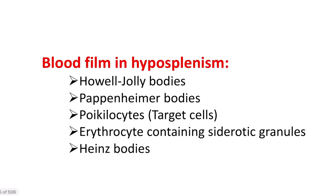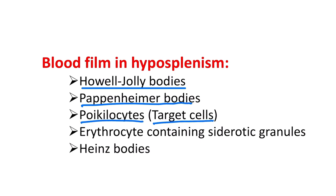After removal of the spleen, there is hyposplensim or no spleen. In this condition, different types of findings are present. First is the Howell-Jolly body — these are present in the blood. Also the Pappenheimer body, poikilocytes (that means target cells), erythrocytes containing sideroblastic granules, and Heinz bodies. These are the blood picture findings after the spleen operation.